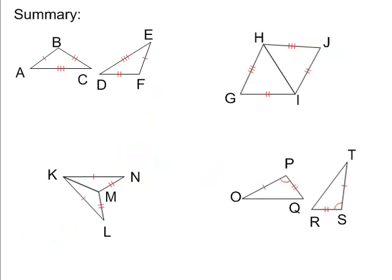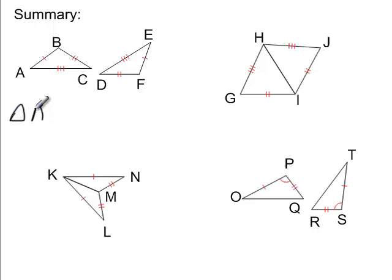Let's try to sum this up. Are the two triangles in the top left corner congruent? We've got a side with one mark, two marks, two marks, three marks, three marks — these two triangles are clearly congruent to each other. The question is what order do we write them in? Triangle ABC is congruent to — A is between the one and three marks.